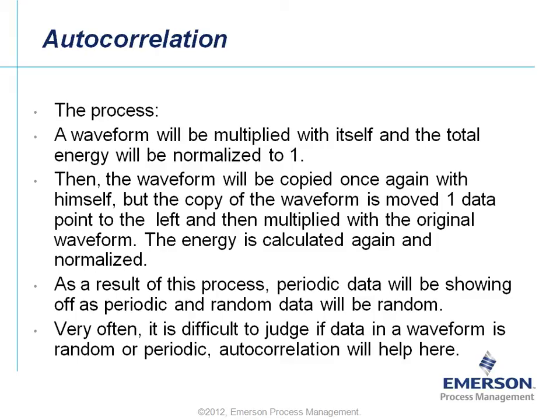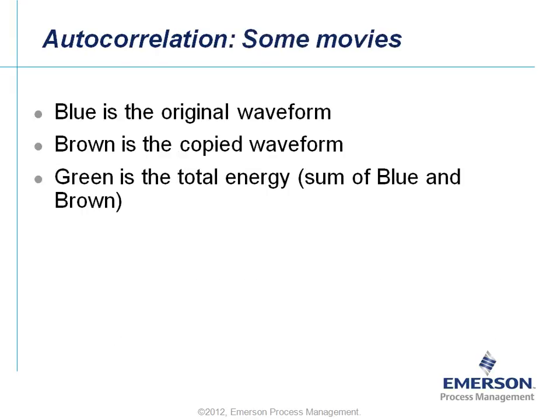Very often it is difficult to judge if data in a waveform is random or periodic. Autocorrelation will help here. To make it more visual, we will show two video tutorials. In each tutorial, you will always see a blue waveform — that's the original. The brown one is a copy of the blue one, and the green one is the total energy, which is the sum of the blue and the brown.